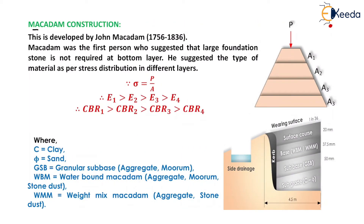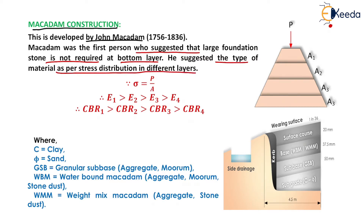Now we move to Macadam construction, which is the best among all four types. This was developed by John Macadam. Macadam was the first person who suggested that large foundation stones are not required at the bottom layer. He suggested that the type of material should be chosen as per the stress distribution in different layers. He analyzed the stresses in each layer and placed material according to the stress coming on that layer.